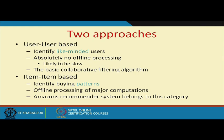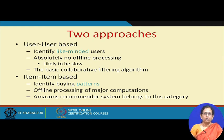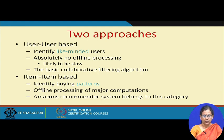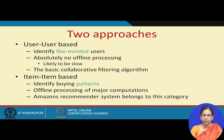In user-user based collaborative filtering, the idea is to identify like-minded users. By finding those like-minded users and looking at the preference of one user, you recommend items to a similar user who are similar in terms of the items they are looking at. This collaborative filtering algorithm is actually the oldest, and in fact the social information filtering — the very first initiative for recommendation generation — used user-user based, like-minded user finding for generating recommendations.